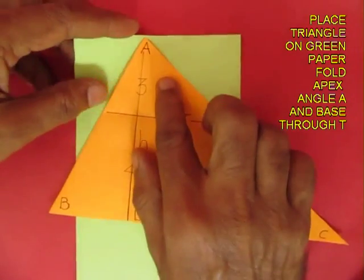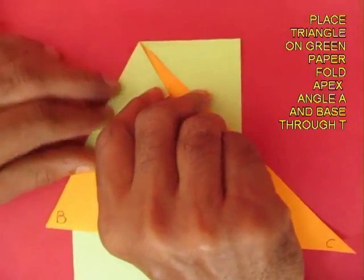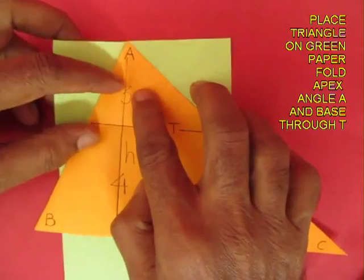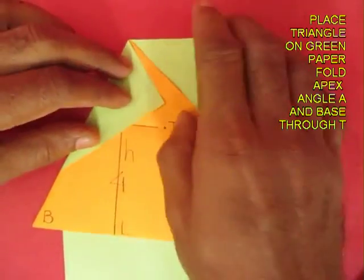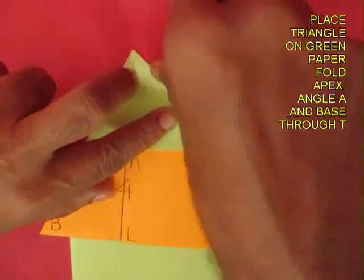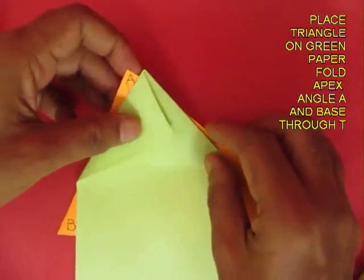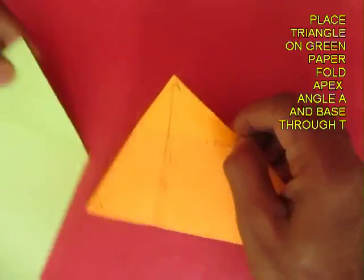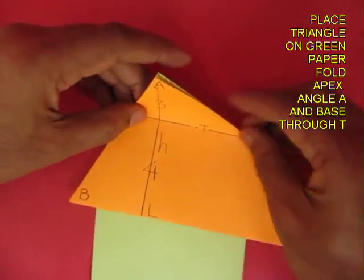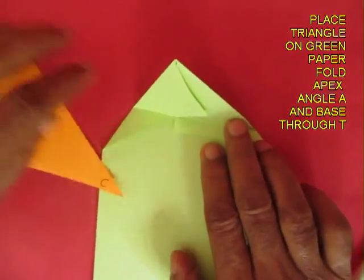Now take a green sheet of paper and fold it on angle A. You get the two sides of a triangle and then place the brown on the green and fold the green so as to also get the base.